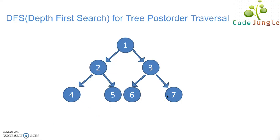So to begin with, we are going to use this tree as an example to understand postorder traversal. In postorder traversal, for a given set of root node, left node and right node, be it a set of these three nodes or these three nodes or these three nodes,